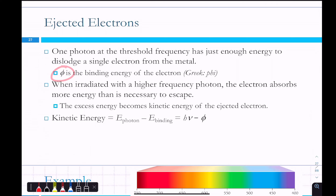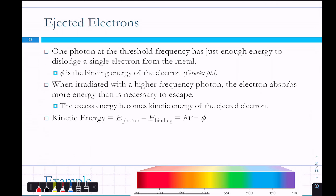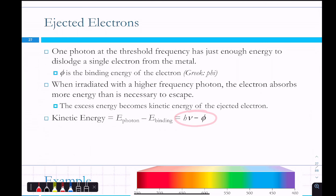This is related to phi (φ), the binding energy of the electron to its nucleus. If you irradiate with a higher frequency photon, the electron absorbs more energy than is necessary to escape, and it gets ejected. The kinetic energy of the ejected electron equals the energy of the photon minus the binding energy. So φ is the binding energy, and if the photon energy is greater than that, there's enough kinetic energy for the electron to leave.